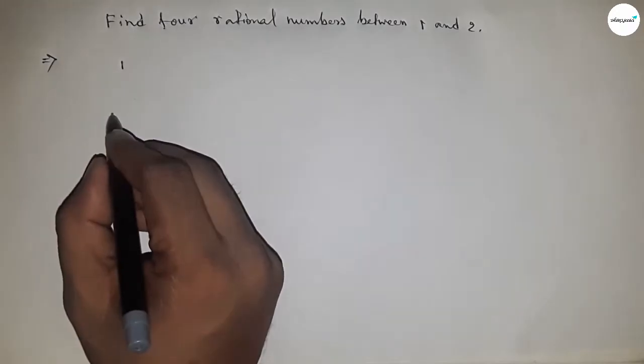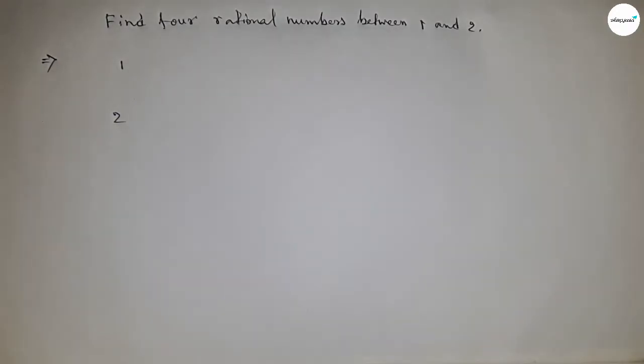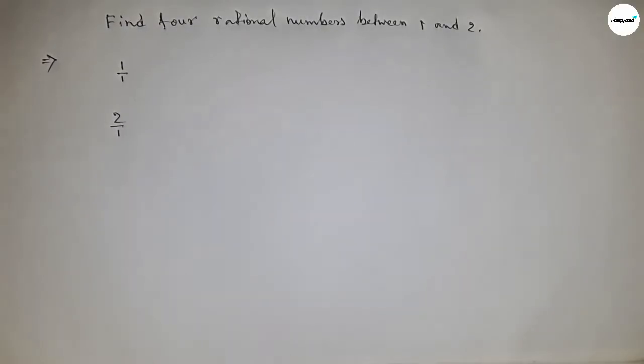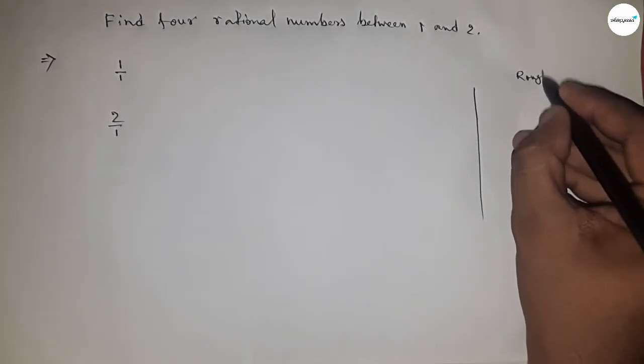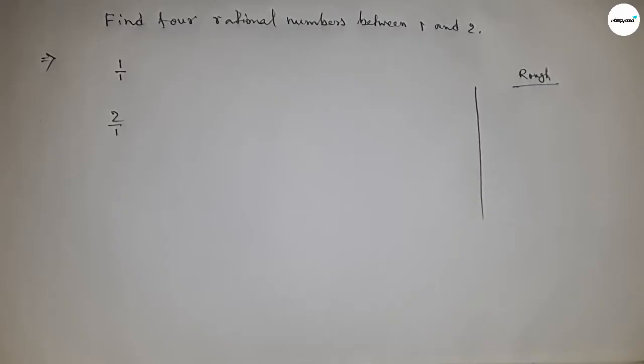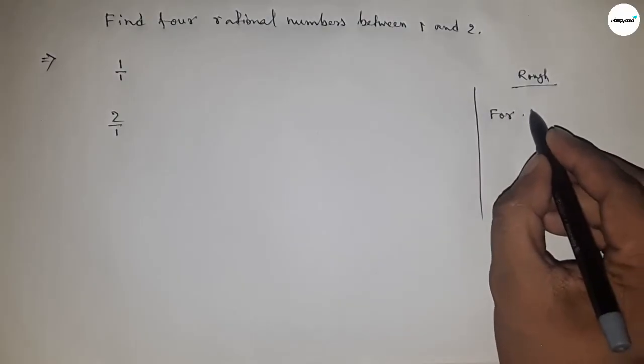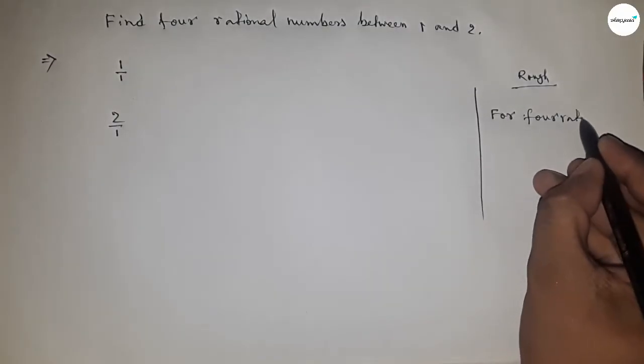The numbers one and two. We can express one as one upon one and two as two upon one. Now, let's discuss the calculation. The denominator of both are equal, so for four rational numbers we have to multiply both rational numbers by four plus one, which equals five.